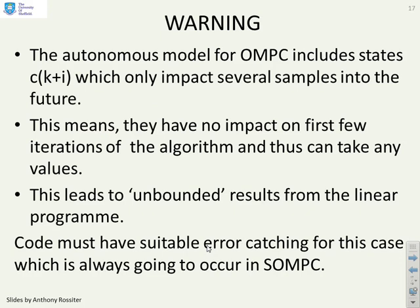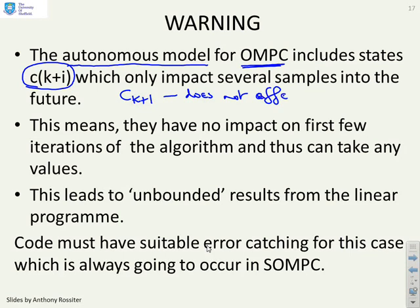A warning. This is quite important because if you're writing this code yourself, there's lots of silly mistakes you can make. If you look at the autonomous model for OMPC, the middle block had states based on c(k+i). But the key thing is, something like c(k+1) does not affect x(k+1). That's quite important because what it means when you're doing your minimization is you can end up with unbounded values for c(k+1) when you start with the initial sample constraints, because the initial sample constraints do not depend on c(k+1), so c(k+1) can be whatever it likes. You can get unbounded results from your linear program, so you need to make sure you've got suitable error-catching within your code to deal with subtleties like this. This is always going to occur in SOMPC.